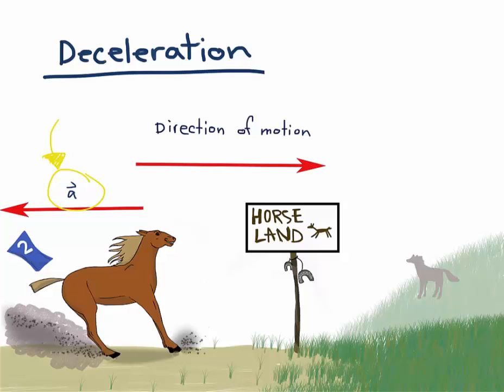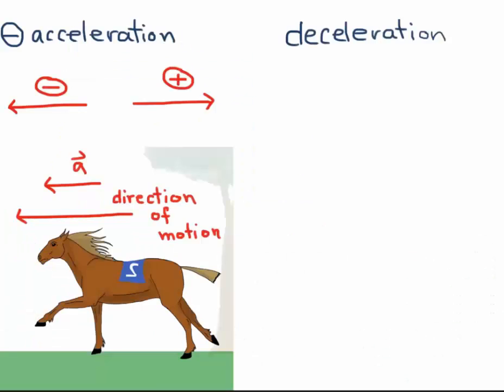Let's summarize by comparing negative acceleration and deceleration. We have seen that we can have a negative acceleration even though the horse is speeding up. It just means that the direction of motion is negative.